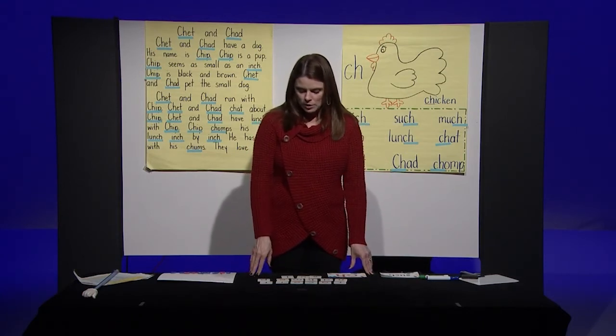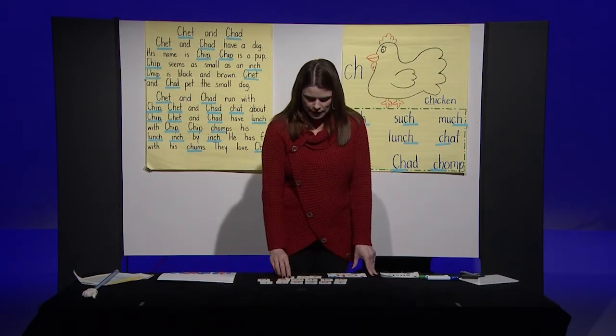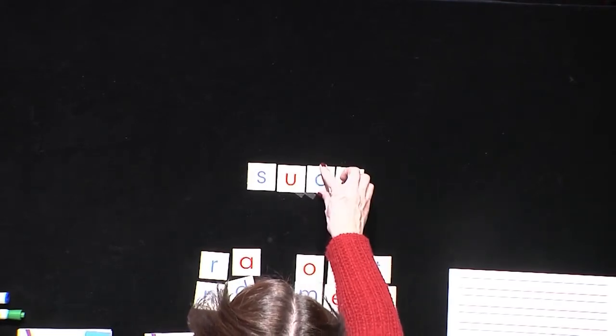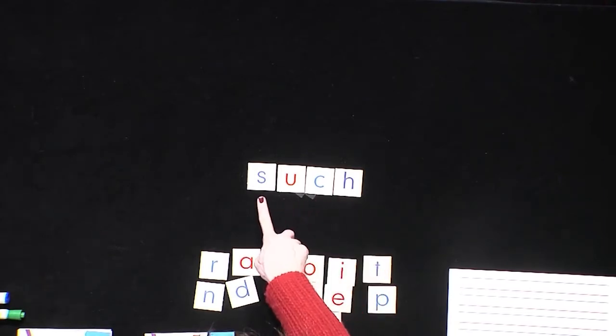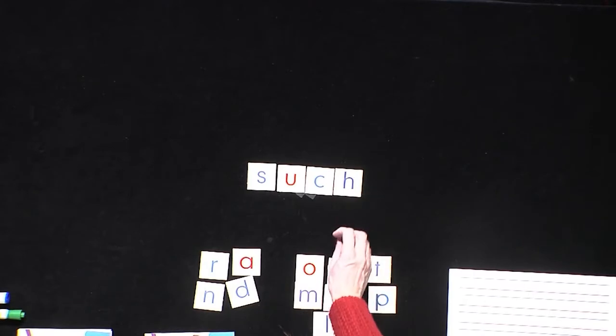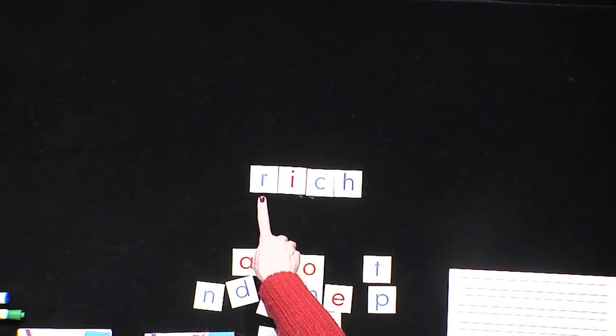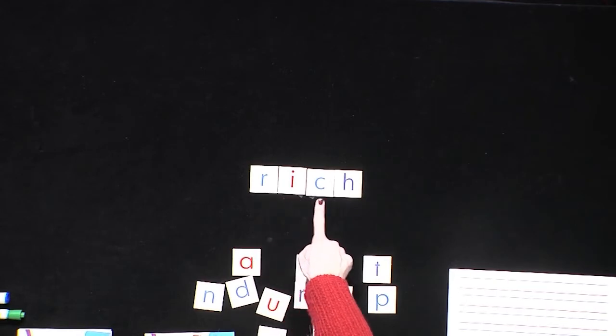Now we're going to read some words. I'm going to build some words with my letter cards and I want you to help me read the words. The first word is S-U-C-H. First let's say the sounds — the CH goes together to make the CH sound. Now blend it: 'such'. And say the whole word: 'such'. Very good. Now I'm going to change those first two letters but leave the CH. Let's see what this new word spells. R-I-CH. Blend it: 'rich'. And the whole word is 'rich'. Very good.